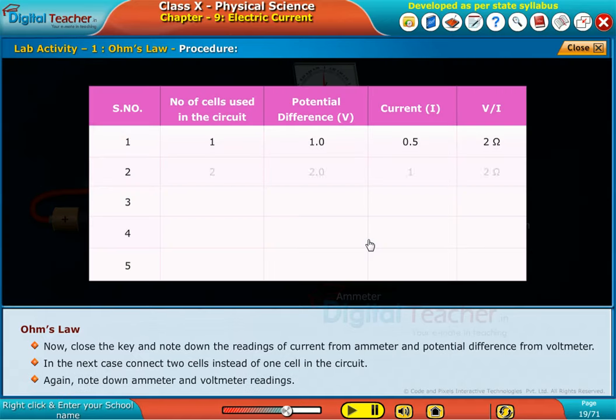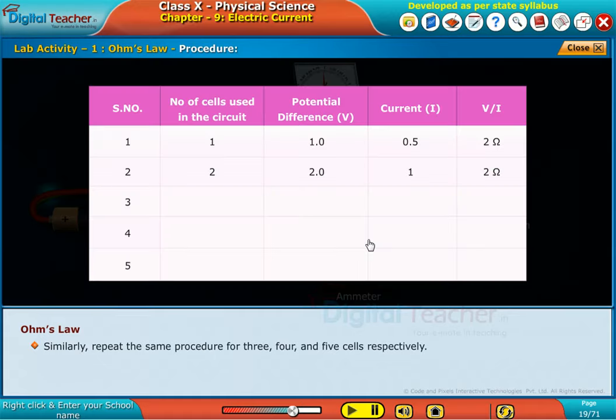Again, note down ammeter and voltmeter readings. Similarly, repeat the same procedure for three, four and five cells respectively.